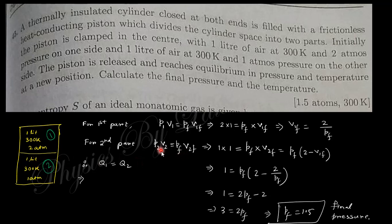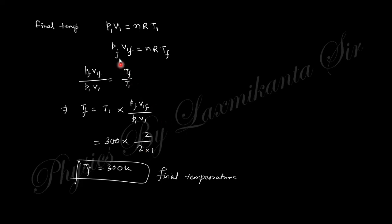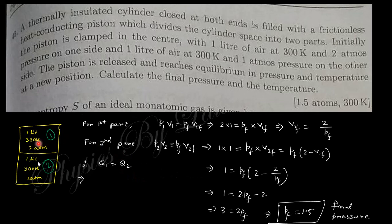For part one: P₁V₁ = PfV₁f, so V₁f = 2/Pf. For part two: P₂V₂ = PfV₂f, and since total volume is 2 liters, V₂f = 2 − V₁f. Solving gives a final pressure of 1.5 atm. The final temperature is found from the ideal gas relation to be 300 K — the same as the initial temperature, so there is no change in temperature.